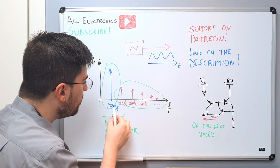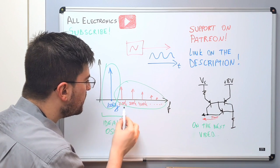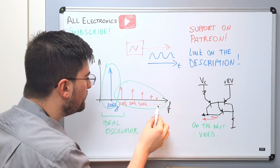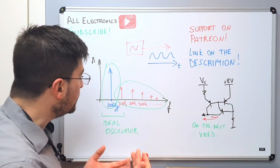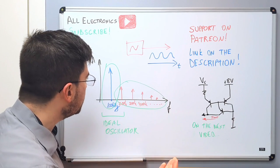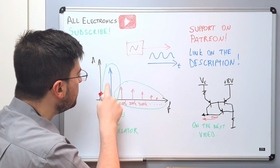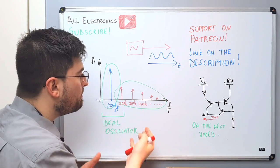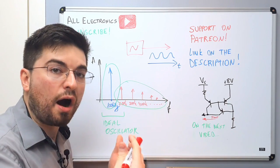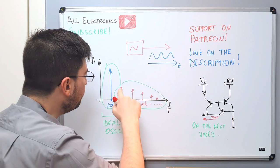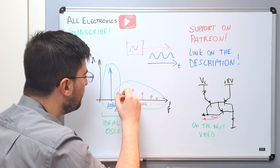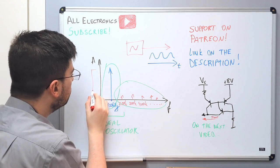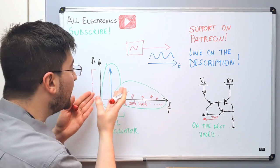These signals are called harmonic content because they are harmonically related to the main tone — this is the second harmonic, the third harmonic, the fourth harmonic, the fifth harmonic. They are integer multiples of the main frequency. Using the ratio between the amplitudes of the main tone and the harmonic content, we can have a measurement of how clean a signal is. If these tones are very low in comparison with the main tone, this is a very clean signal.